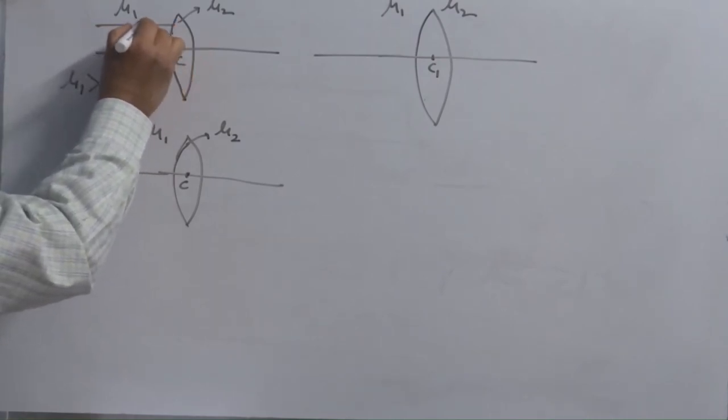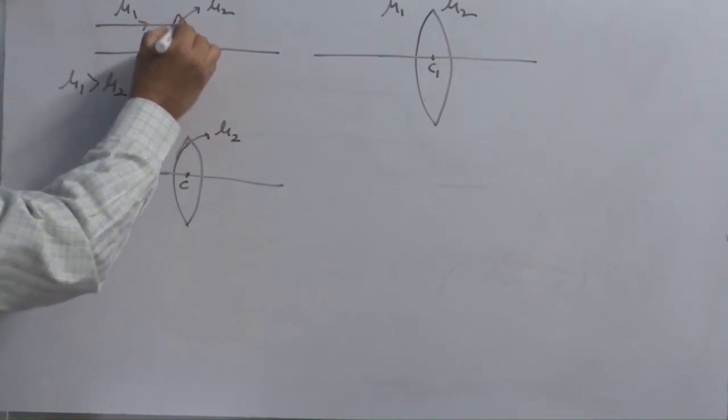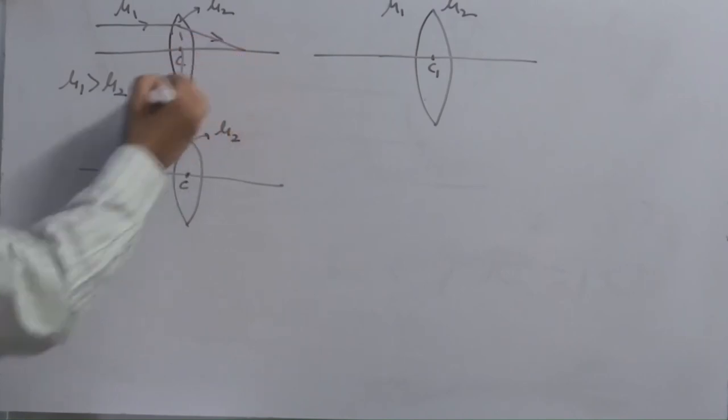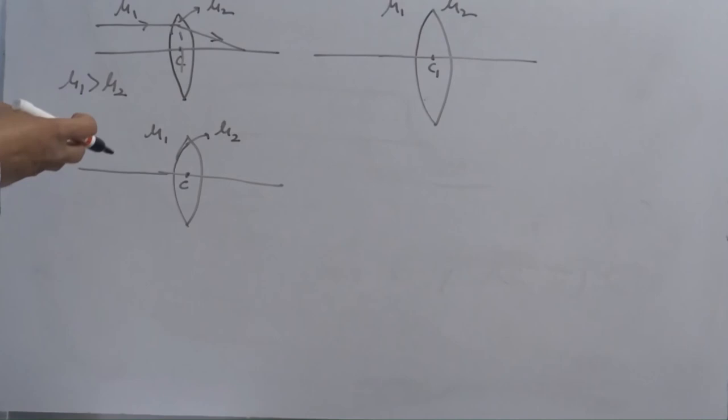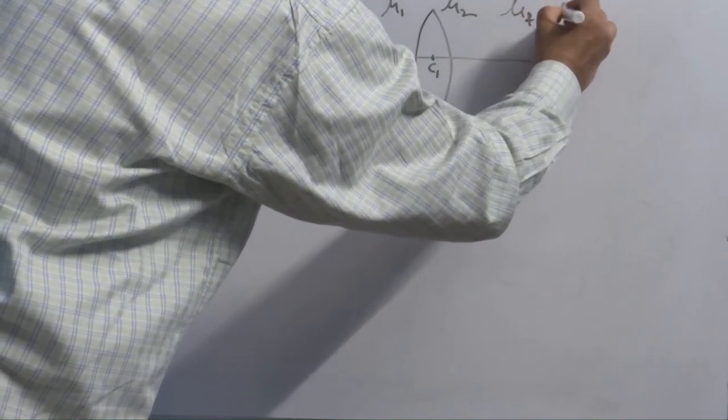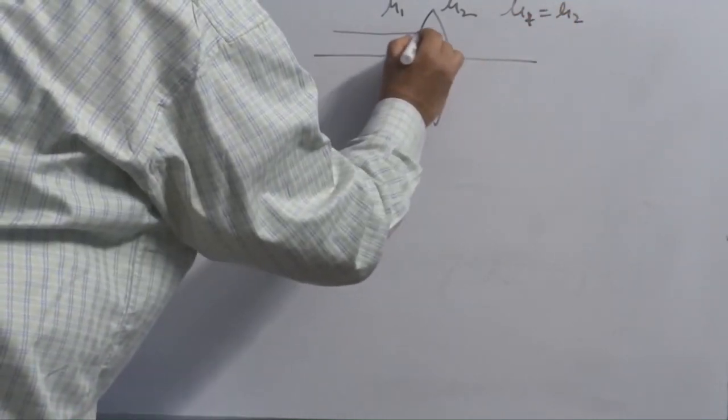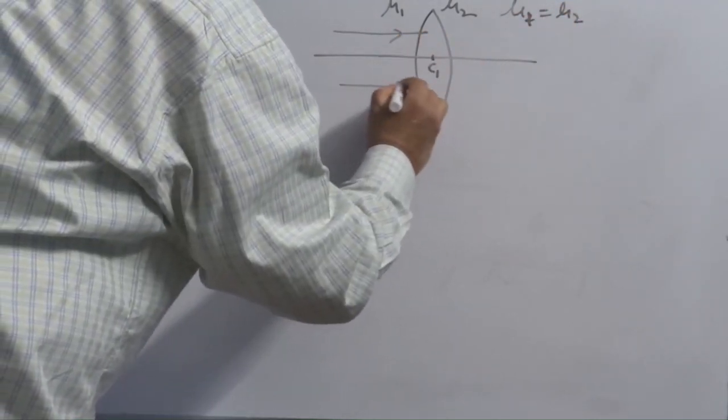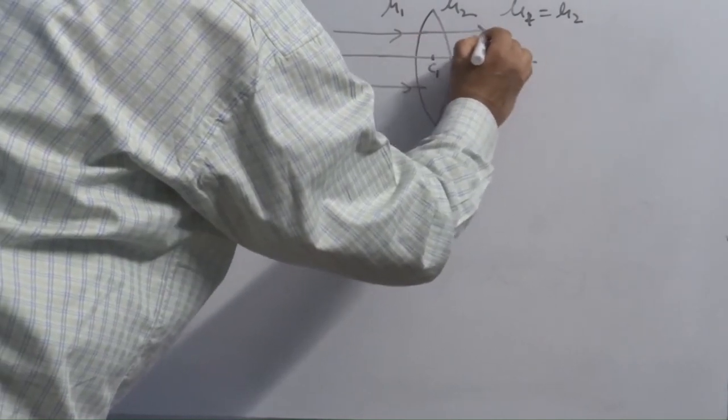So the ray of light coming from here, it bends towards the normal. Converging nature of convex lens which you define in day-to-day life, it is applicable only when outside medium of the lens is air. When mu 1 is equal to mu 2, the ray of light coming parallel to this principal axis moves without deviation. In this case,